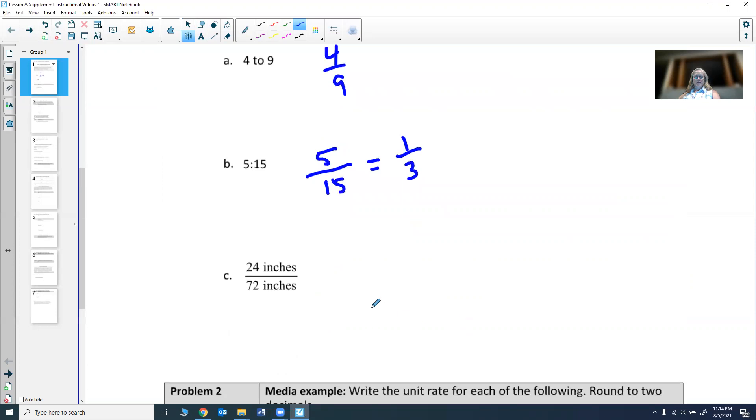Another example is 24 inches over 72 inches. So again, I want to see what simplifies, what's common with these. 24 actually goes into 72 three times.